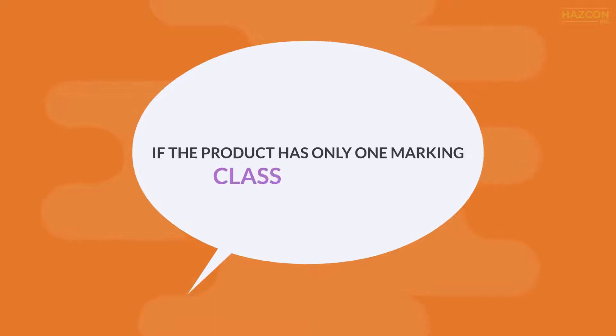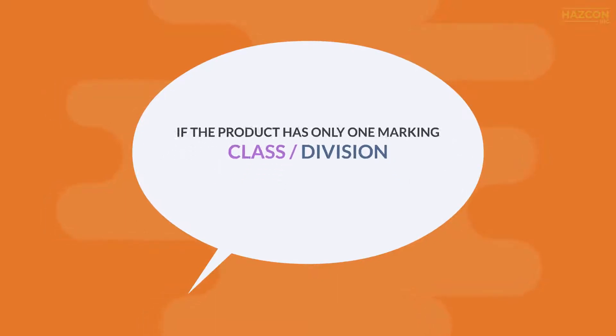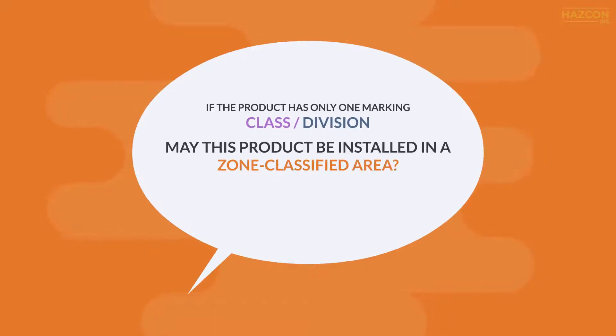If the product has only one marking, class division for example, may this product be installed in a zone classified area?